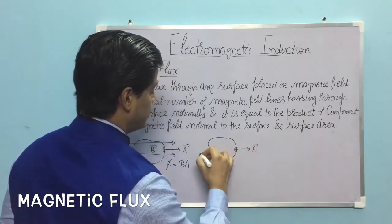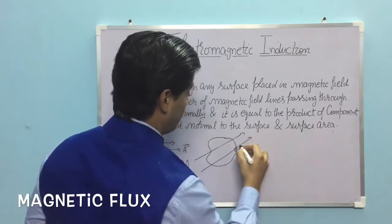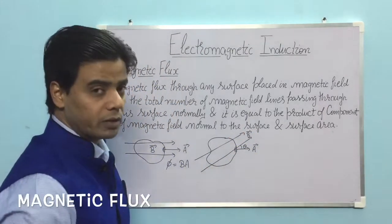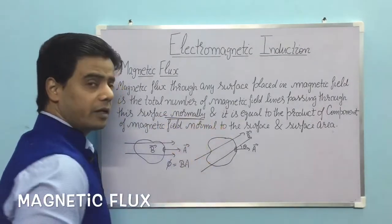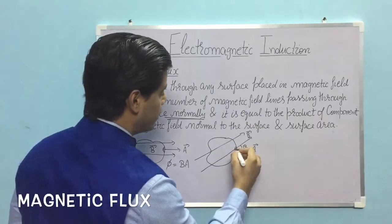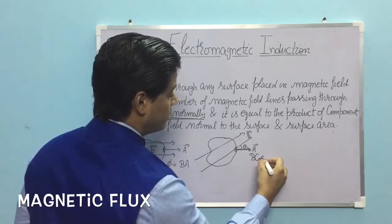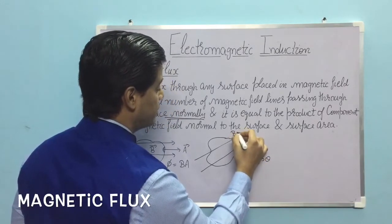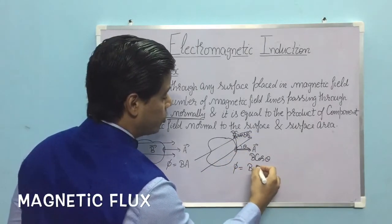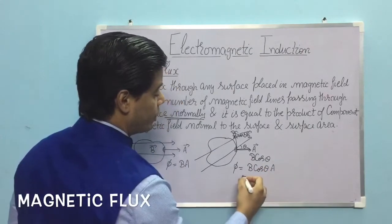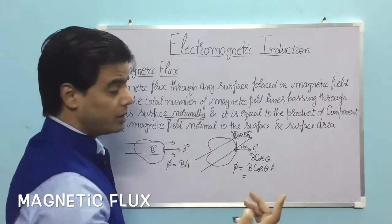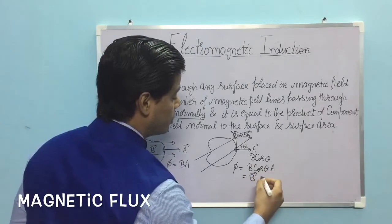But if for the same surface the area vector is still in this direction and the magnetic field is making a certain angle with the area vector, then I can't take flux as just B into A, because in the definition we have the word 'normally.' Therefore we have to resolve the magnetic field into its components. One component will be along the direction of the area vector, which is B cos theta, and another component is B sin theta. So in this case, flux equals B cos theta into A. From our knowledge of dot products, A·B equals AB cos theta, therefore this can be written as B vector dot A vector.